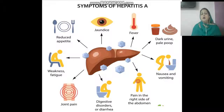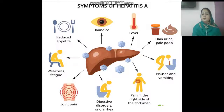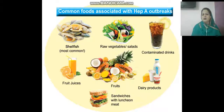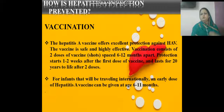Prevention includes washing hands properly, cleaning belongings, and cooking food thoroughly, since uncooked or raw food can also cause hepatitis A. Common foods associated with hepatitis A include shellfish and contaminated drinks. The hepatitis A vaccine offers excellent protection. It consists of two doses given six to twelve months apart, with protection starting one to two weeks after the first dose and lasting twenty years after two doses.